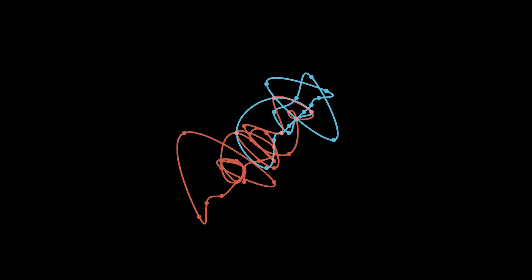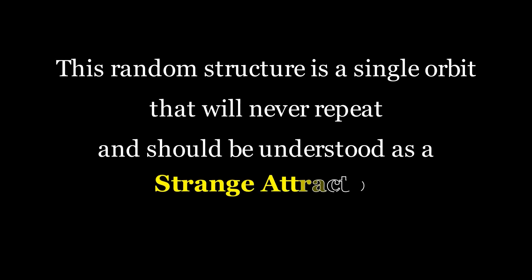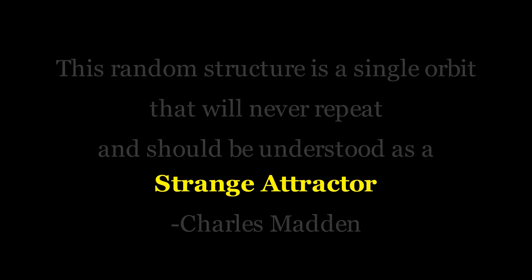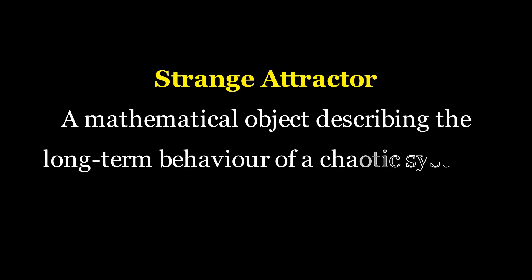However, and in a point which leads nicely to our next concept, composer and mathematician Charles Madden disagrees, stating, this random structure is a single orbit that will never repeat, and should be understood as a strange attractor. That's a lot to take in. And the question arises, what does Madden mean by a strange attractor?